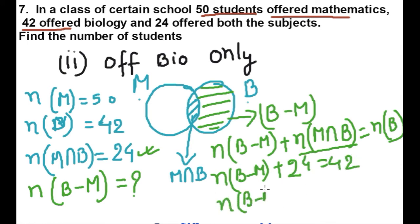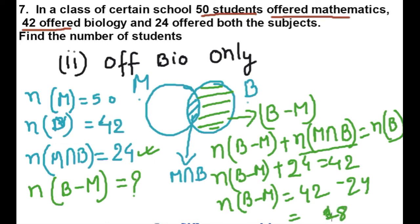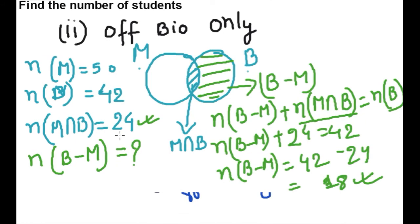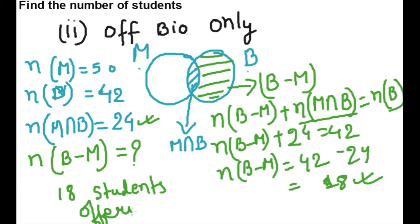Number of elements of B minus M plus 24 equals 42. So B minus M equals 42 minus 24, which is 18. So 18 students are offering only biology.